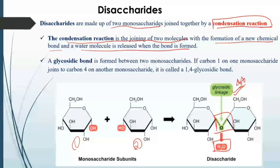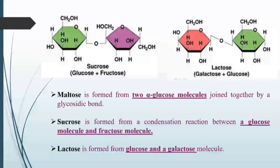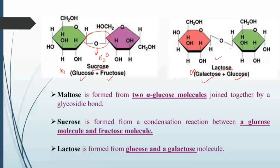A glycosidic bond is formed between two monosaccharides. For example, if carbon one of one monosaccharide joins to carbon four of another monosaccharide, it is called a 1,4-glycosidic bond. Sucrose is made up of glucose and fructose monosaccharides; lactose is made up of galactose and glucose. You can see where the carbons bond and a glycosidic bond is formed with water released.